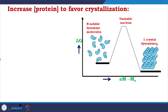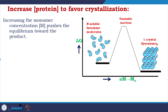We are discussing how to favor crystallization. This plot puts free energy and polymerization together. We have soluble lysozyme molecules and crystals of lysozyme through an activation barrier of an unstable nucleus. Increasing the monomer concentration, designated as M, pushes the equilibrium towards the product — from NM (monomers, protein molecules) to Mn (the crystal where millions of protein molecules are arranged in an array).